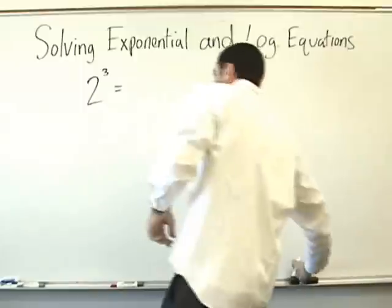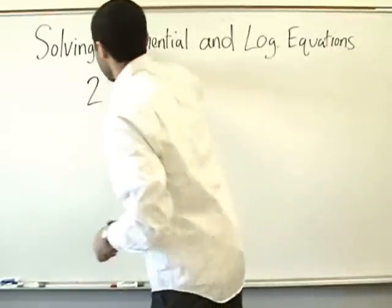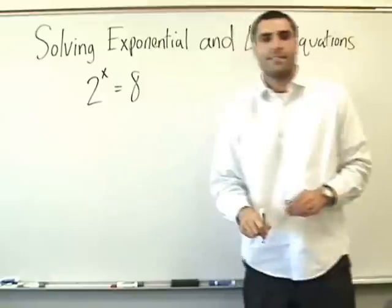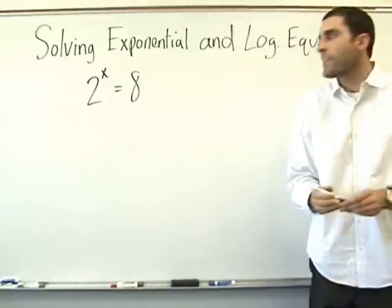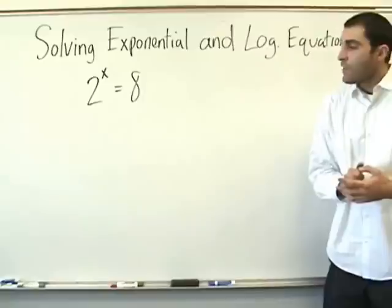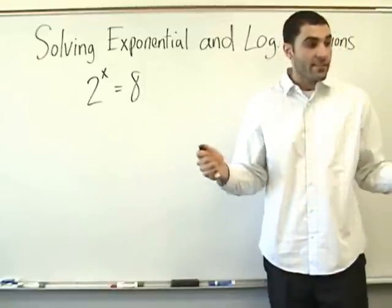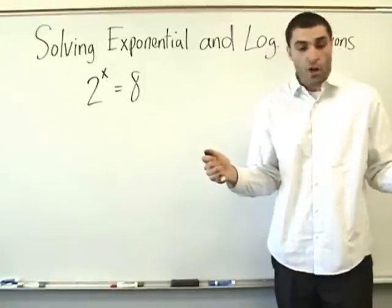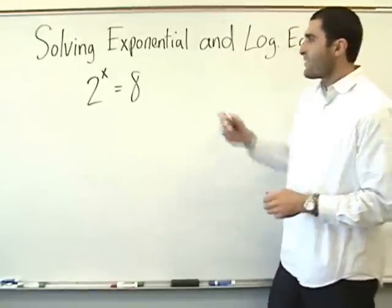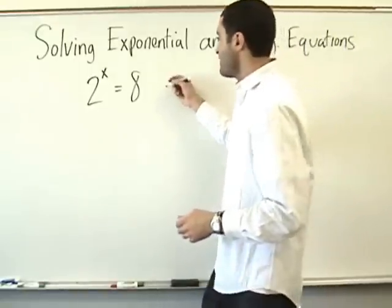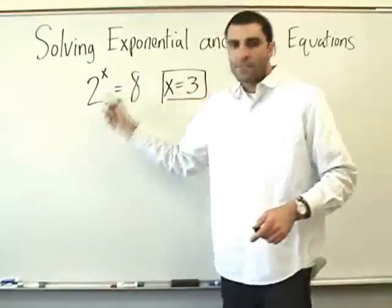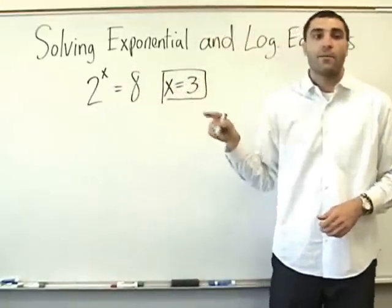Let's go like this. Here we go. 2 to the x equals 8. We're solving now. So who knows what x is? 3? Good. x equals 3. Because 2 times 2 times 2 is 8.